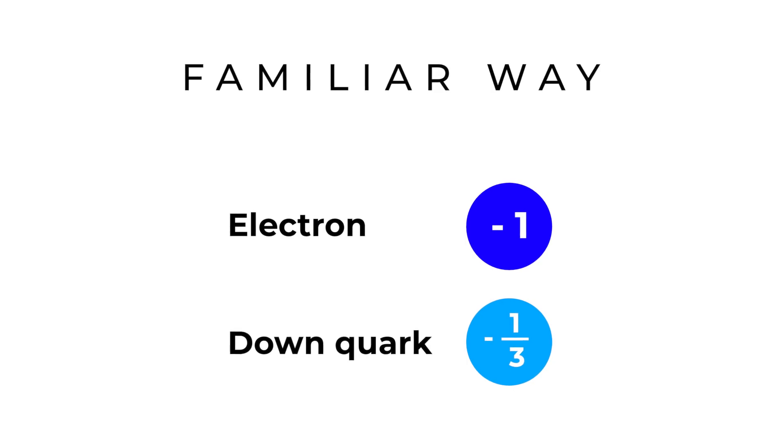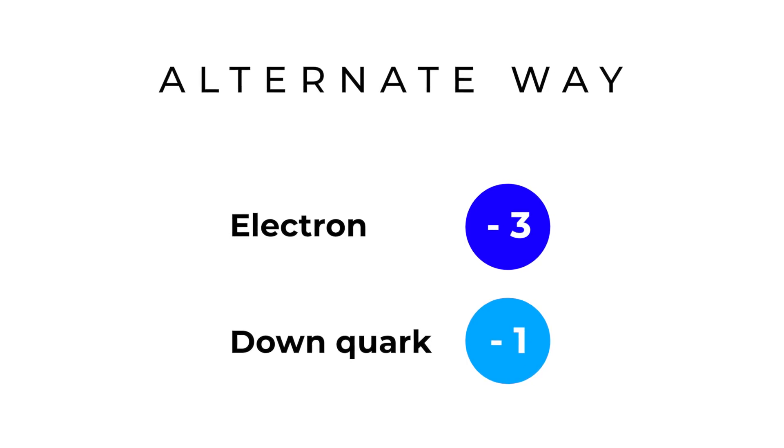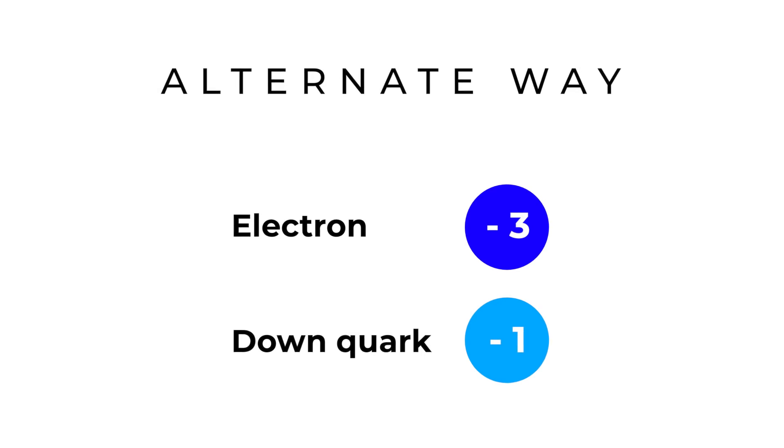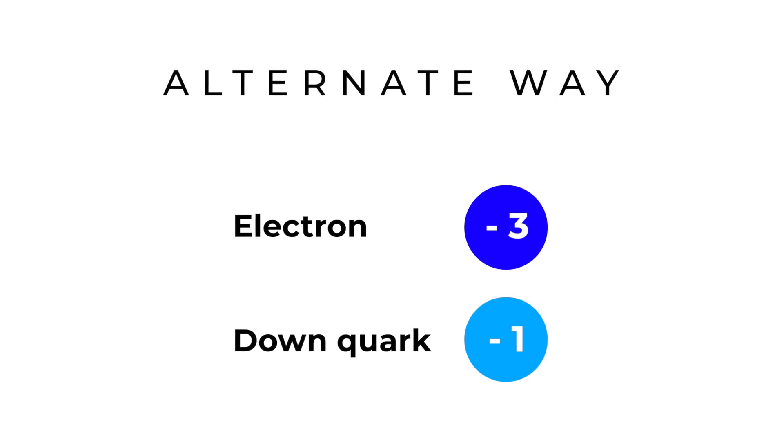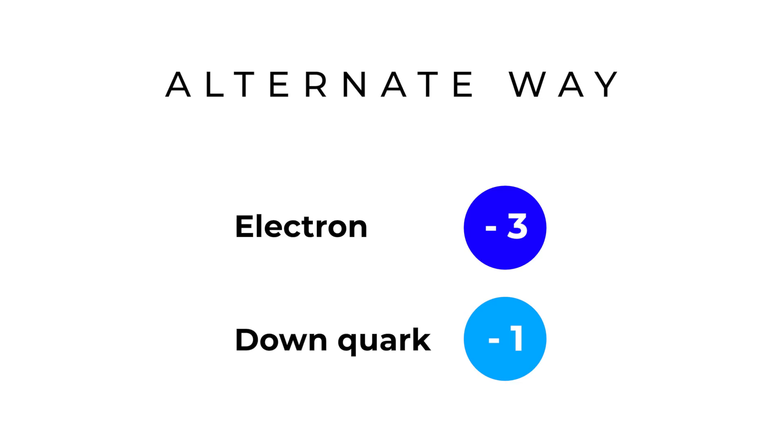So, you could have just as easily changed your definition of charge and said the down quark had a charge of minus one. In that case, the electron would have a charge of minus three. So, it's still not a problem. The charge is quantized. It just is quantized in smaller allotments than you would think if you use the electron as your base charge. Good question.